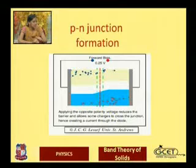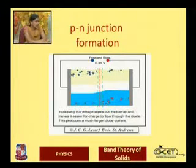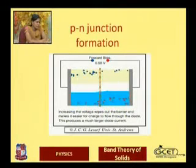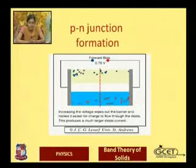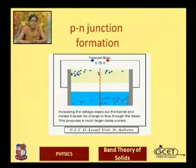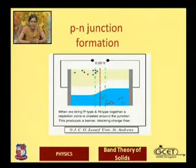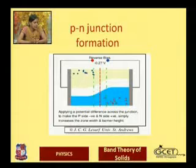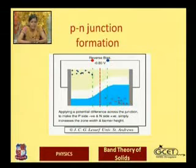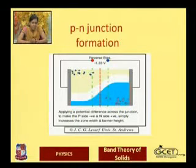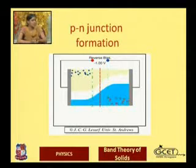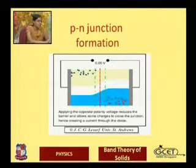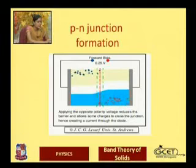Initially, without any biasing applied, once the p-n junction is formed, the majority charge carriers from both sides come closer to each other. A depletion zone is created, and in this depletion region, electron-hole recombination occurs.